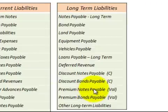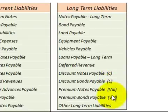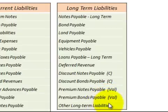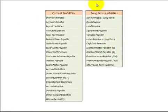I also have the premium here, which I've marked as a valuation account. A valuation account is sort of like a contra account, only working in the same direction. That's about it — this should be a reasonably good list to use as a reference for doing accounting textbook problems.